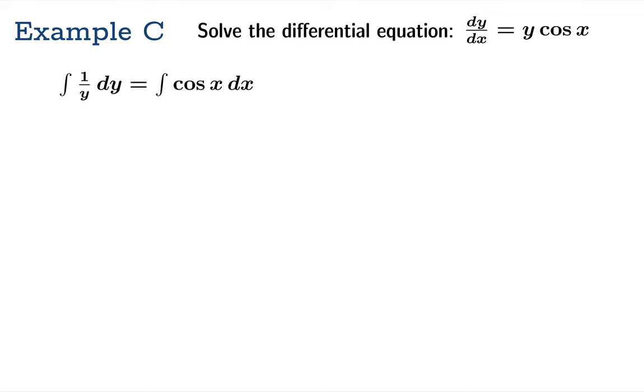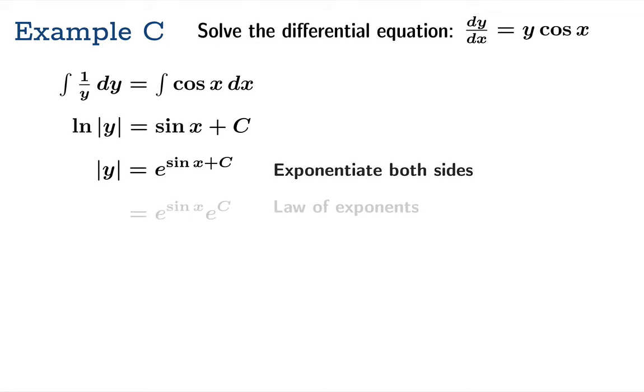Let's move on to a new example. Solve the differential equation dy/dx equals y cosine x. Separate variables. This time the integration gives us the logarithm on the left side, so logarithm of the absolute value of y equals sine x plus c. We're going to exponentiate both sides and use the law of exponents to rewrite the right side as e to the sine x times e to the c.